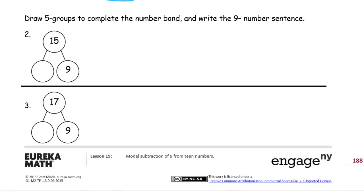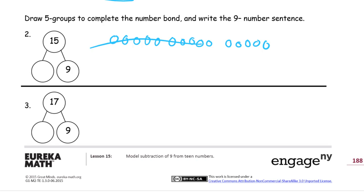Now we're drawing five groups to complete the number bond and write the nine-minus number sentence. We draw 15 dots in five group rows, then cross out nine. That means there's five and one more — six are left. So the number sentence is: fifteen minus nine equals six.